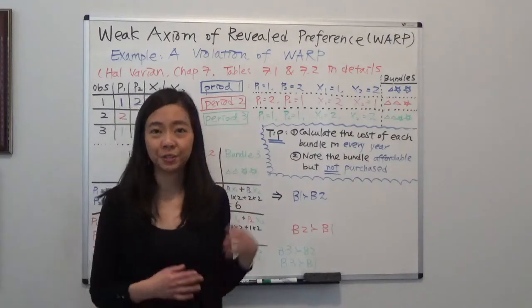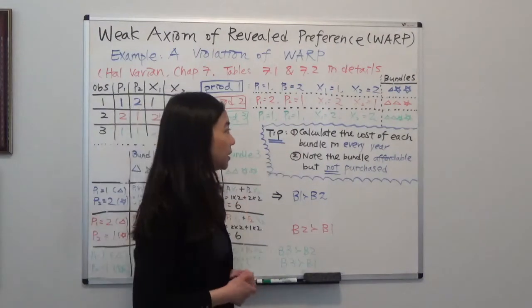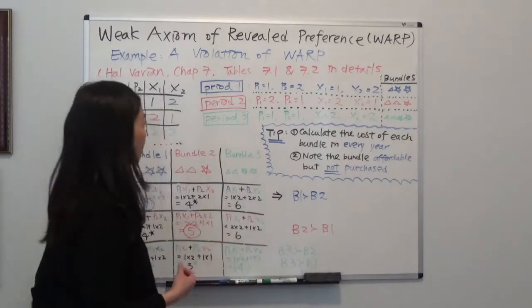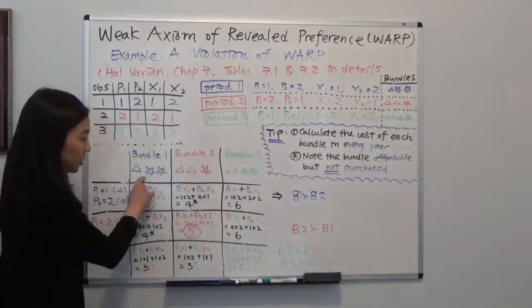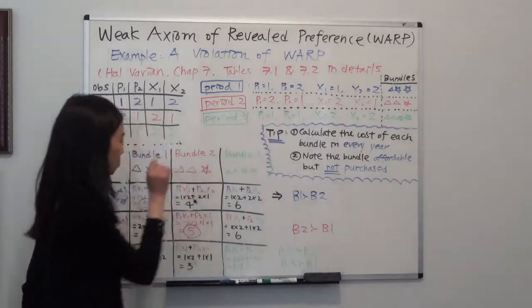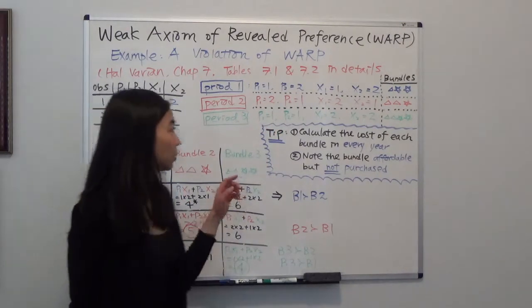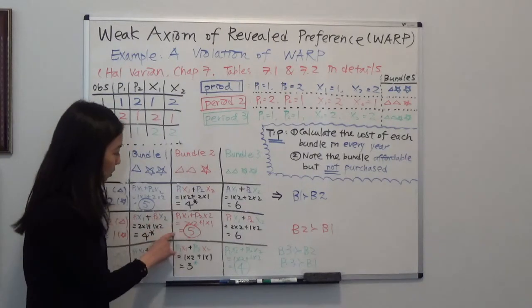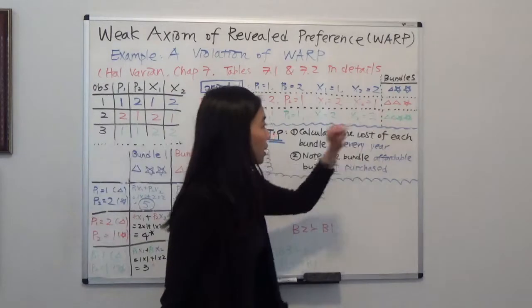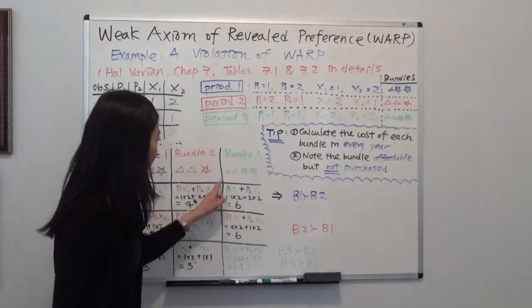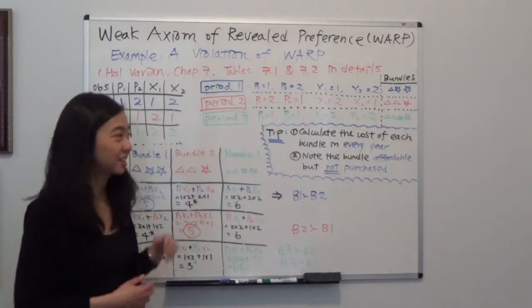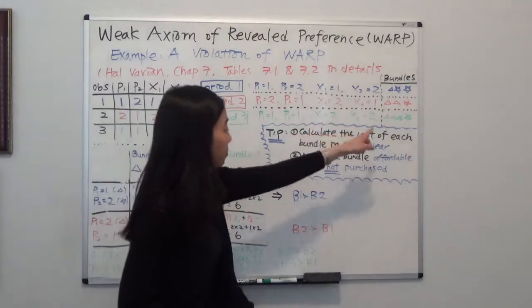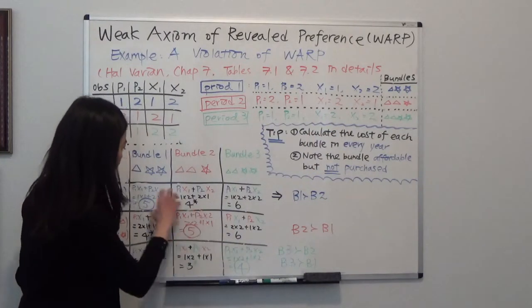Here's a tip to see whether there's a violation of WARP. First, you're going to calculate the cost of each bundle — bundles 1, 2, and 3 — in every single year. So not only do you calculate the cost of bundle 1 in year 1, but also in year 2 and year 3. Likewise, calculate the cost of bundle 2 in year 1, year 2, and year 3, and bundle 3 in year 1, year 2, and year 3. We know the consumer purchased bundle 1 in year 1, bundle 2 in year 2, and bundle 3 in year 3 — these diagonal bundles are the ones actually purchased.